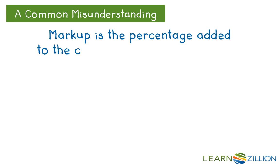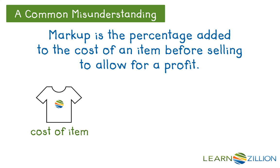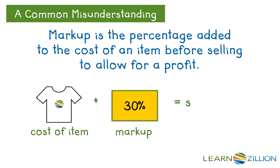Markup is the percentage added to the cost of an item before selling to allow for a profit. Cost of the item plus the markup equals the selling price. If the 7th graders sell t-shirts for the same amount it costs to buy them, they won't make a profit. A markup is the percent added to an item to allow a profit during a sale.